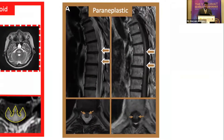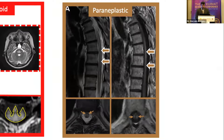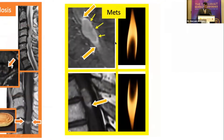Paraneoplastic myelopathy presents with longitudinally extensive transverse myelitis that is tract-specific, symmetric, and centrally located, with enhancement. Without enhancement, consider B12 deficiency instead. Metastasis to the spinal cord shows a very distinctive rim and flame sign on contrast imaging.